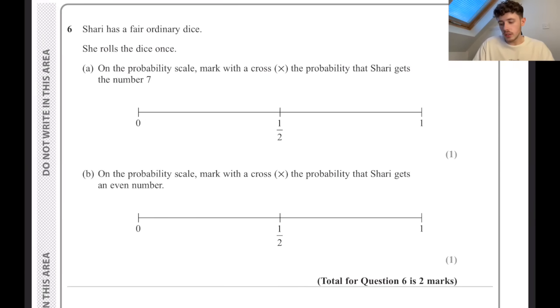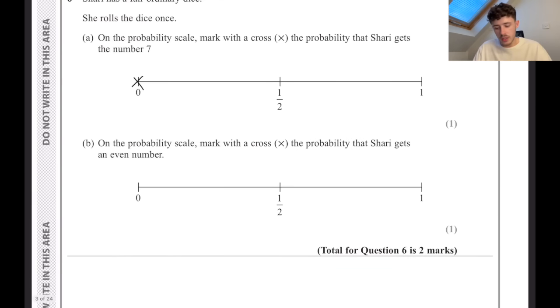Sherry has a fair ordinary dice. She rolls the dice once. On the probability scale, mark with a cross the probability that Sherry gets the number 7. That is going to be a 0 because it's a fair ordinary dice that only goes up to 6. Mark with a cross the probability that Sherry gets an even number. That's going to be half because you've got 2, 4, 6 out of 6 numbers in total.